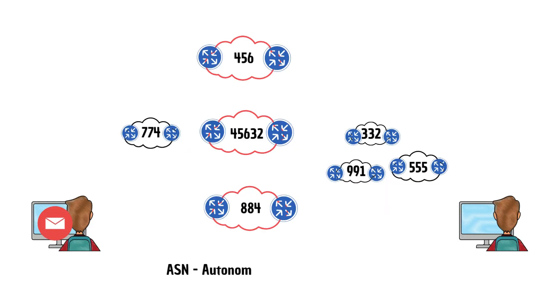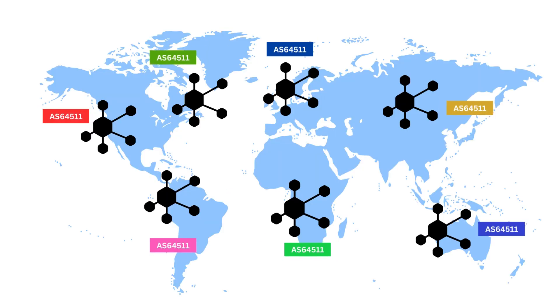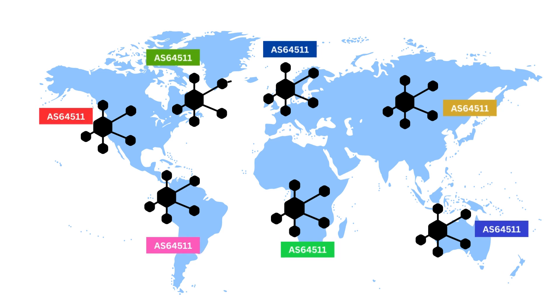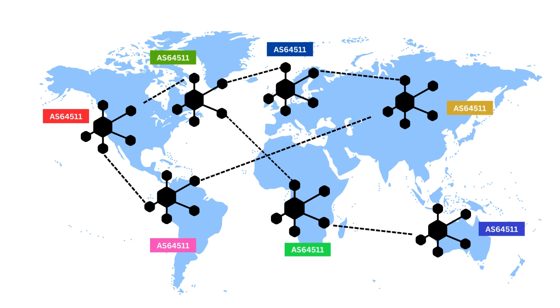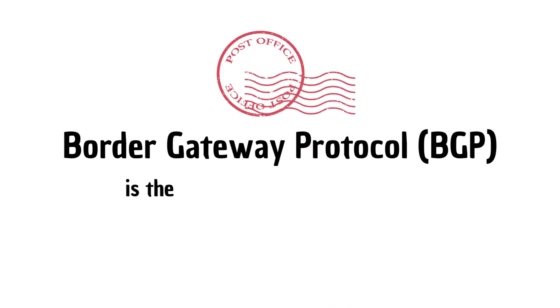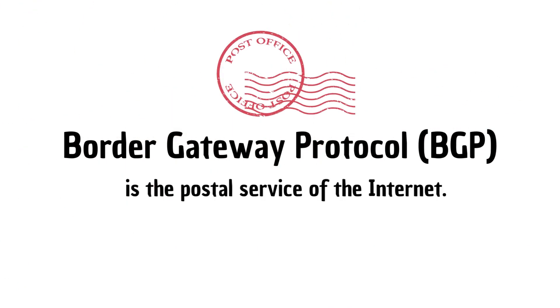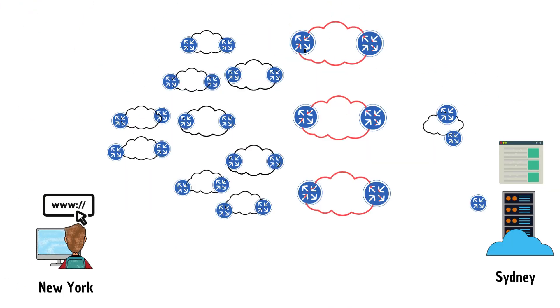In the postal world, each post office has its own number. Similarly, on the internet, each network has its own autonomous system number, or AS number, representing the network. Network operators or internet service providers need an AS number to control routing within their network and exchange routing information with other ASNs.